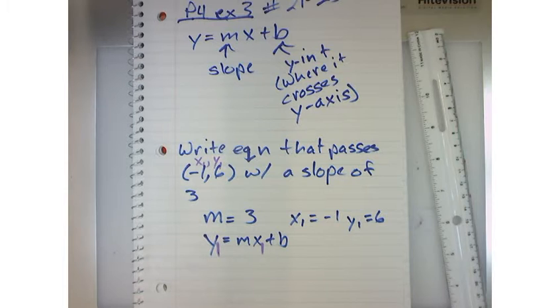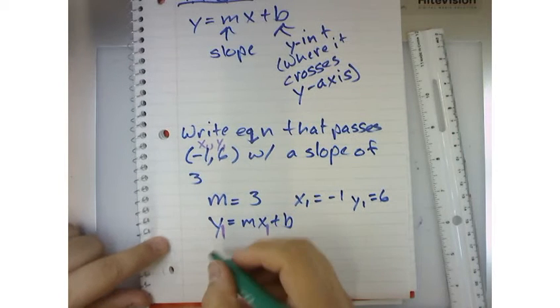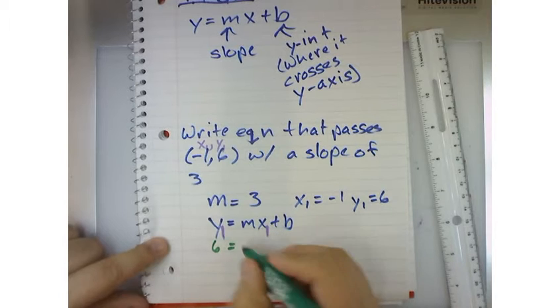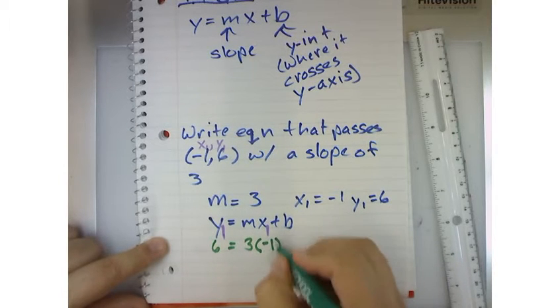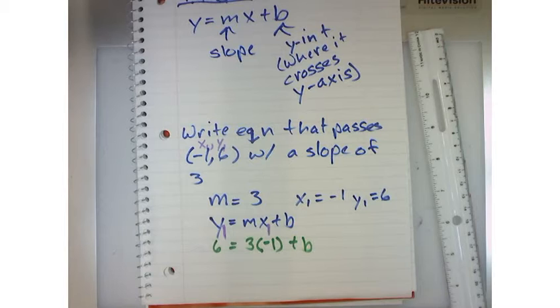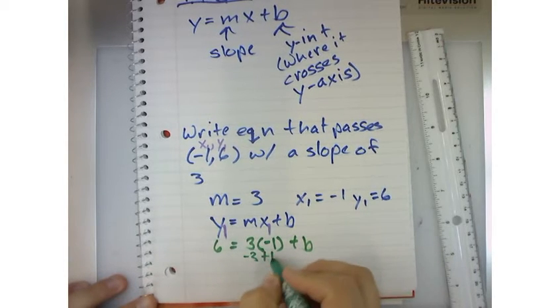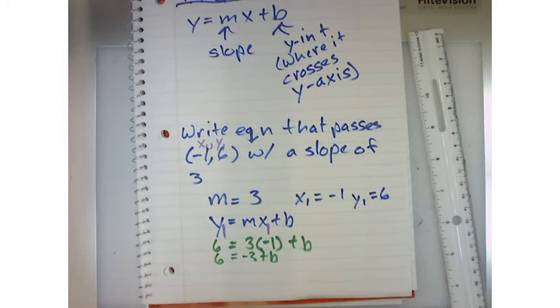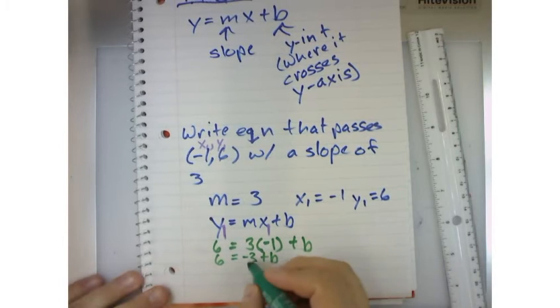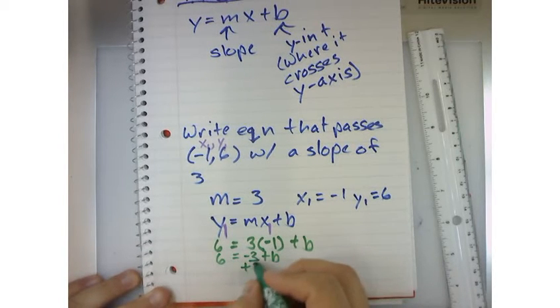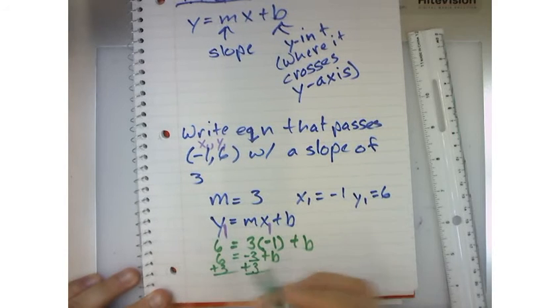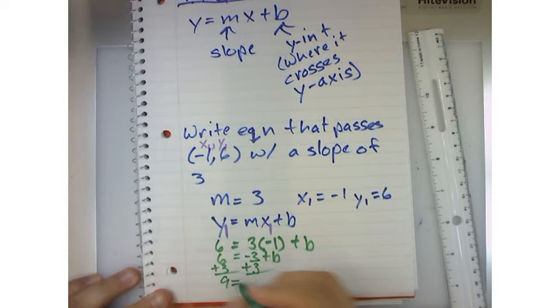And so what we do is we plug and chug. So we're going to plug in 6 is equal to 3 times the quantity negative 1 plus b. And we don't know what b is. So this becomes negative 3 plus b. So b is the number that we subtract 3 from to get 6. So what's b? Or we could just solve if that's a little too much for you guys early in the morning. So we could say that b is equal to 9.